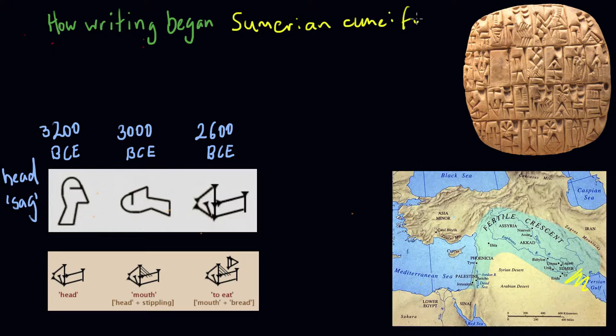Cuneiform. And the word cuneiform comes from the Latin cuneus, which just means wedge, as in the distinctive wedge-shaped Sumerian writing.